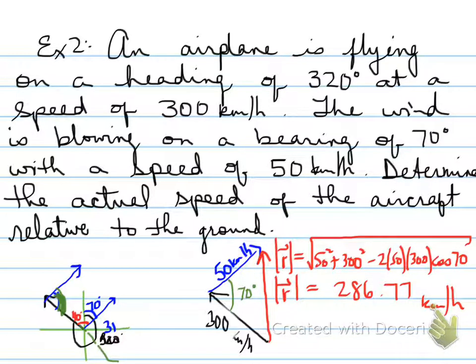The question only asks for the speed of the aircraft, so all we need is the magnitude of the resultant vector, which is 286.77 kilometers per hour. If we needed the angle, we would determine which specific angle was being asked for.